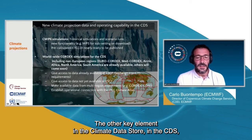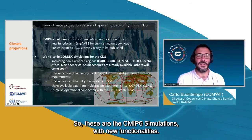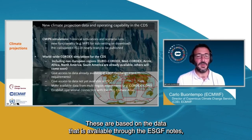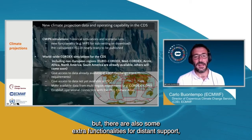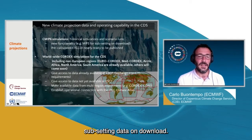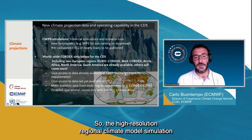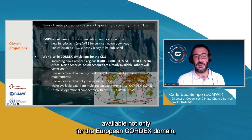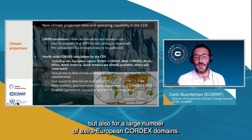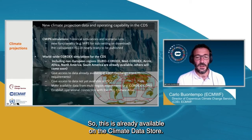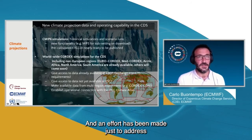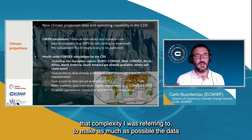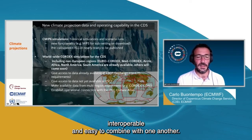Another key element in the Climate Data Store is access to climate projections — specifically the CMIP6 simulations with new functionalities. These are based on data available through the ESGF nodes but with extra functionalities such as subsetting data on download. Also available are high-resolution regional climate model simulations from CORDEX, not only for the European CORDEX domain but also for a large number of extra-European CORDEX domains, made interoperable and easy to combine with one another.